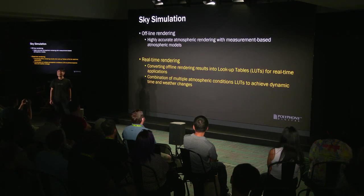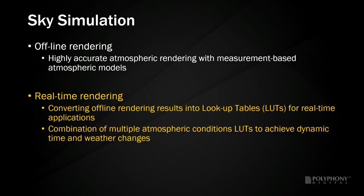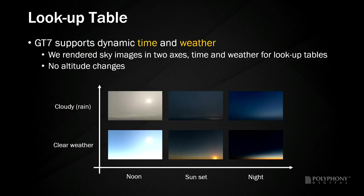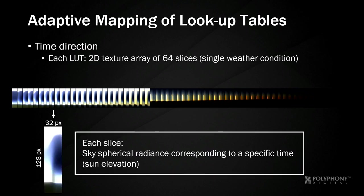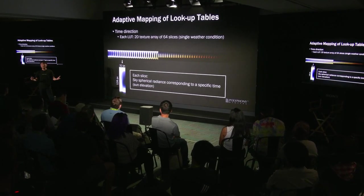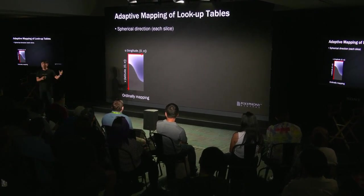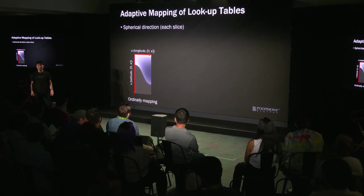Next, I will talk about the real-time rendering. We convert the result of high-quality offline rendering into look-up tables for real-time rendering. In addition, to achieve dynamic time and weather changes, we use a combination of multiple atmospheric condition look-up tables. We rendered sky images in two axes — time and weather — and converted them into look-up tables. Each look-up table is a 2D texture array of 64 slices corresponding to a single weather condition. Each slice contains sky spherical radiance corresponding to a particular time. Adaptive mapping is performed for each slice to save texture resolution.